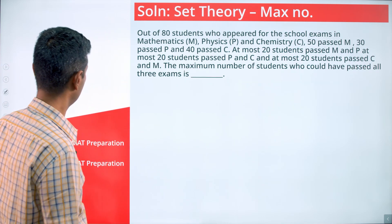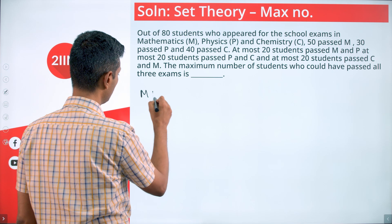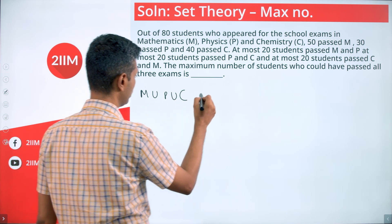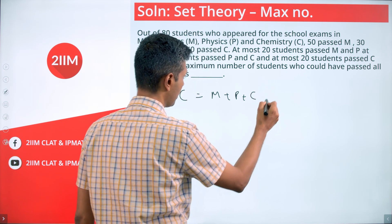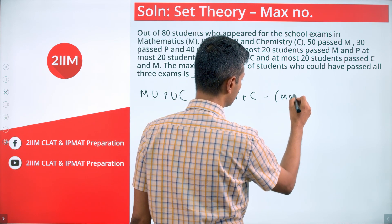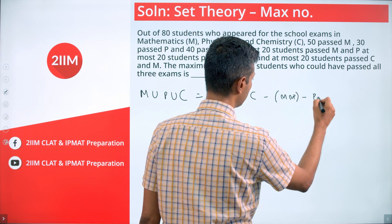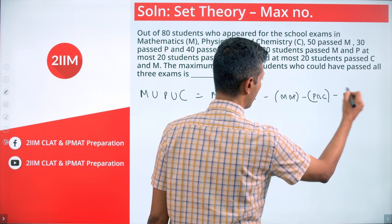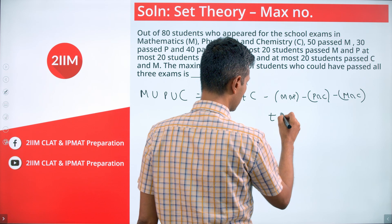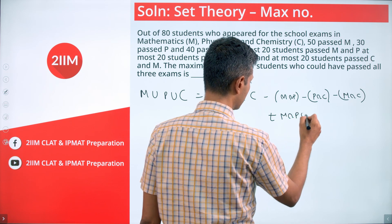Now I'm going to go to the math of it. M union Physics union Chemistry equals M plus P plus C minus M intersection P minus P intersection C minus M intersection C plus M intersection P intersection C.